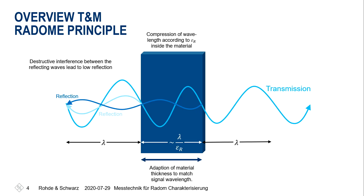The second way to measure permittivity is by measuring the phase. Inside the material, the wave travels at a different speed — no longer at the speed of light — and that causes a phase change. So there are actually two ways of characterizing the material: first, through the resonance frequency, and second, through the transmission phase. Both ways are possible with the QAR50.